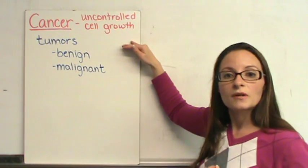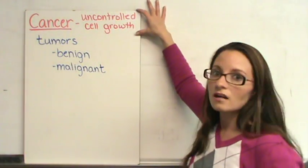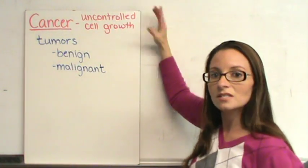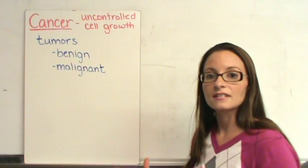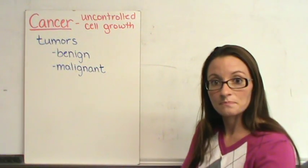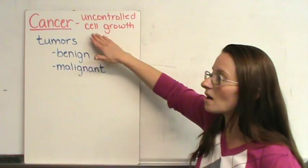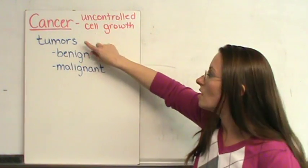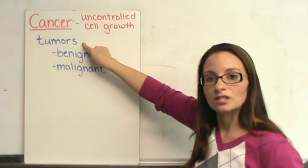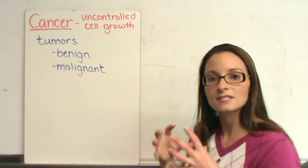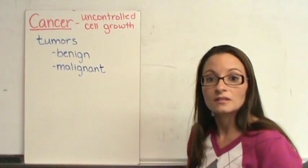So finally we're going to talk about cancer. Cancer is uncontrolled cell growth. So that means your cells are just dividing and dividing and dividing and there's no stop to them. This uncontrolled cell growth forms what are called tumors. The tumors are the large sacks of cells within your body that shouldn't be there.